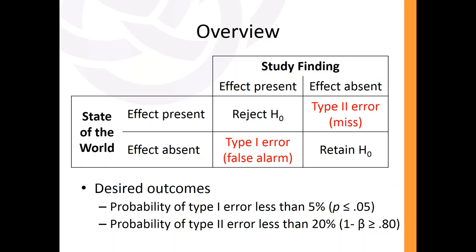We also have to consider the probability of a type 2 error, which we want to be less than 20% — meaning we want to miss real effects less than 20% of the time. This is represented by a power value of 0.8. In G-Power you'll see it defaults to 0.95, which is a stricter standard, but in social science 0.8 is generally agreed upon as the minimum, and that's the basis for determining your required sample size.